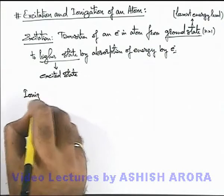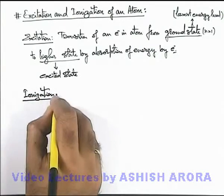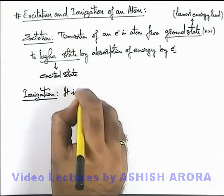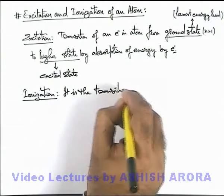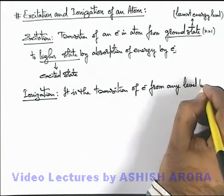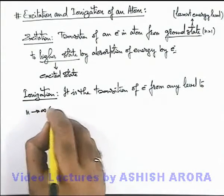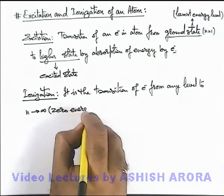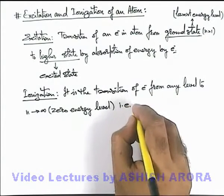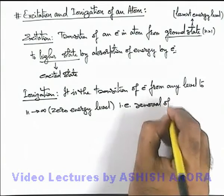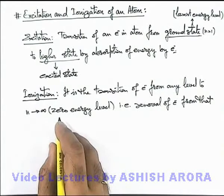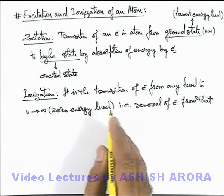If we talk about ionization, then for ionization of a hydrogenic atom or any other atom, we can define it as the transition of an electron from any level to n tending to infinity. That is basically the zero energy state — we have already studied the zero energy level where electron energy is zero.